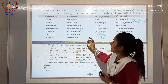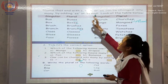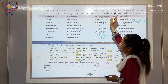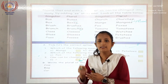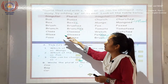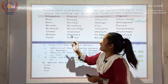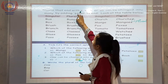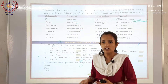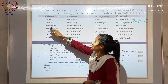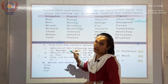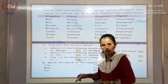I will repeat once again. Nouns that end with S, X, CH, or SH — jho naam S, X, CH, or SH se end hota hai, singular mein — us ko plural mein convert karne ke liye E-S use karna hoga. For example: B-R-U-S-H, add E-S. Don't be confused.